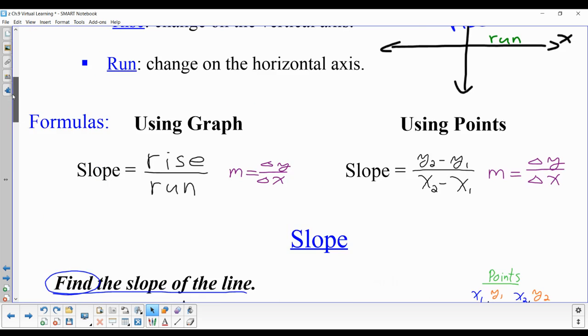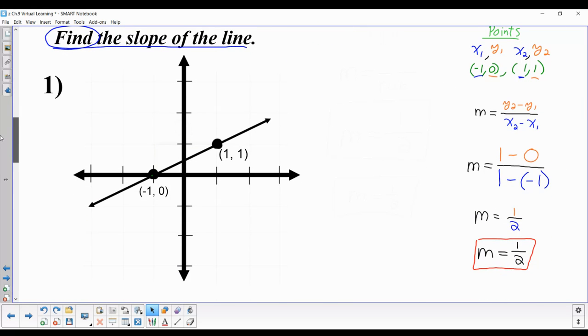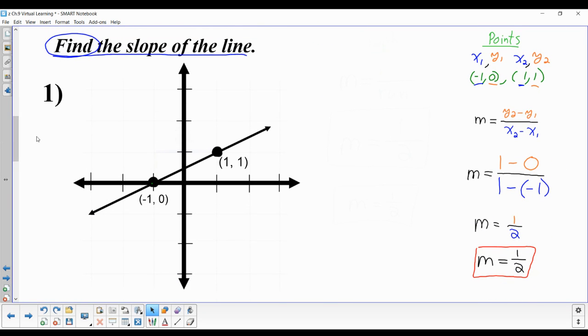Let's do an example. To find the slope using ordered pairs, we'd write down the pairs and the formula—either Δy/Δx or y₂-y₁ over x₂-x₁. Then we'd do the subtraction and find our slope.